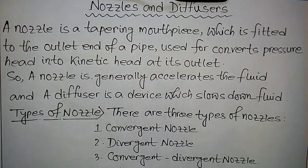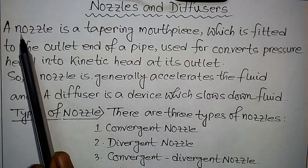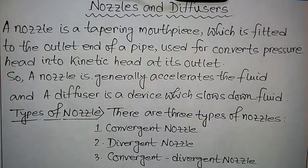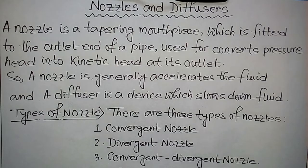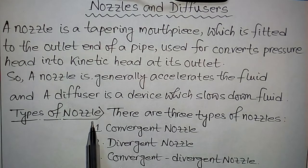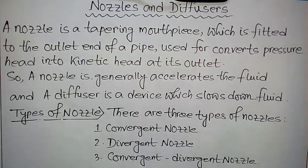A diffuser is the inverse shape of a nozzle — it is a device which slows down the fluid. If the fluid used is steam, the nozzle is called a steam nozzle. If the fluid used is water, it is called a water nozzle.